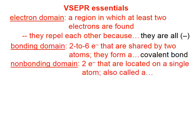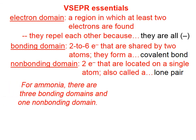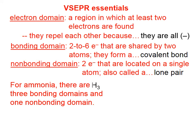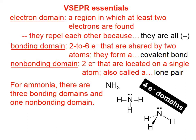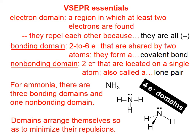A nonbonding domain is two electrons that are located on a single atom. These are also called lone pairs or unshared pairs. For example, in ammonia, which has the formula NH3 and that Lewis structure, there are three bonding domains and one nonbonding domain. You can see here that we have one nonbonding domain or one lone pair and then one, two, three bonding domains. Four electron domains total, three of them bonding. And these domains arrange themselves so as to minimize their repulsions. The ammonia molecule takes a generally tetrahedral geometry.